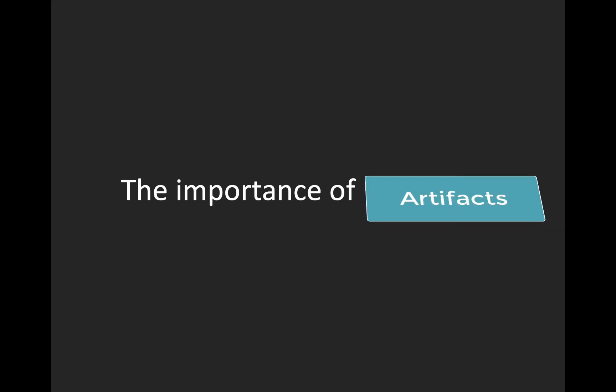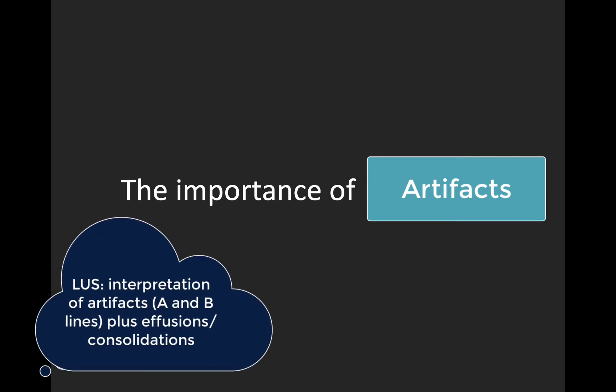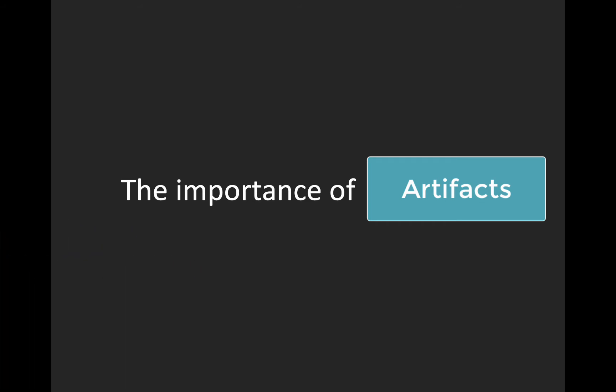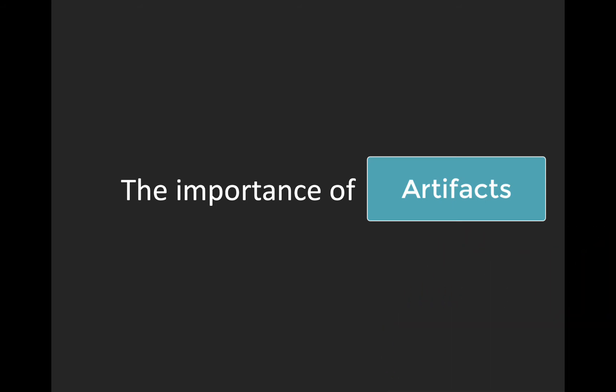Before we start talking about technique, a brief word about the importance of artifacts. Scanning the lung parenchyma really is the interpretation of ultrasound artifacts, in contrast to when we scan the liver or the kidney, where we're actually seeing the organ itself. This is because ultrasound beams can't penetrate the air-soft tissue interface. Rather, the ultrasound waves interact with bright reflectors like the pleural line and create artifacts depending on the nature of the interface, including both scatter and reflection at the pleura.